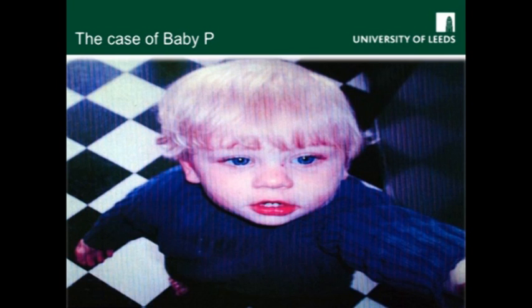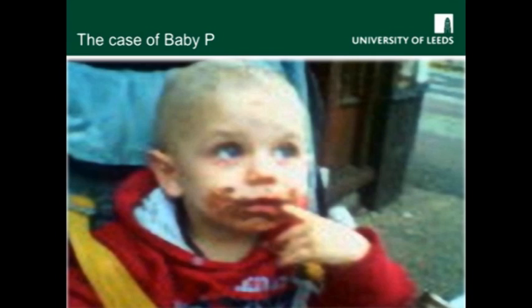We begin a consideration of attachment theory with a shocking story of Baby P, which hit the headlines in 2008. This picture was taken when Baby P was 12 months old, just months before his mother's boyfriend and lodger started to abuse him. His mother and grandmother were also accused of physical abuse and neglect of Baby P. This picture, taken in 2008, just a few months before Baby P died, shows a thin and exhausted child, his face smeared with chocolate to conceal bruising.